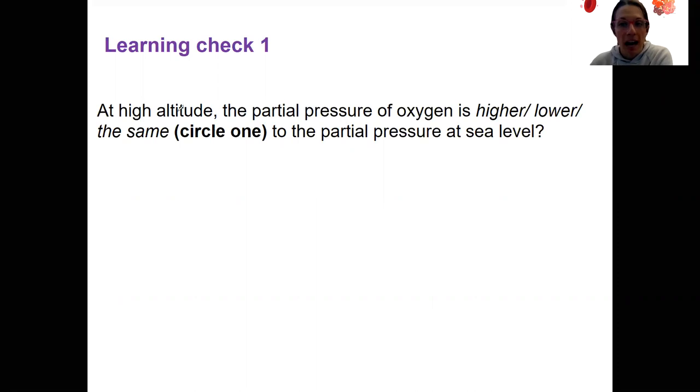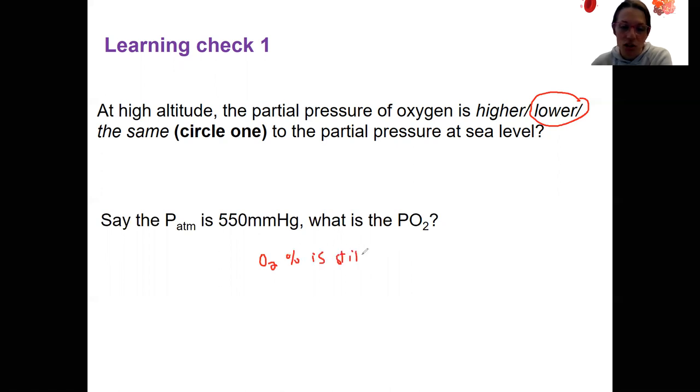Learning check one. This is kind of application. We've talked about high altitude before. How and what that does to the total pressure of the atmosphere. What does that do to partial pressure of oxygen? It's going to be lower, right? Given that information, let's say PATM, the whole system lowers, right? What is PO2, then? Well, I'll give you this one thing. Oxygen percent is still 21%.